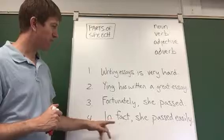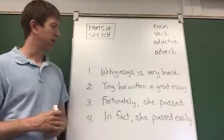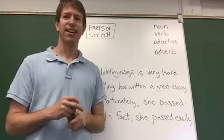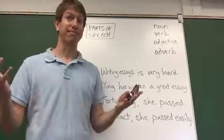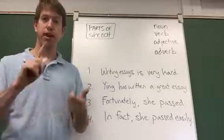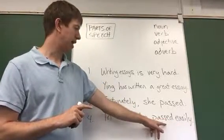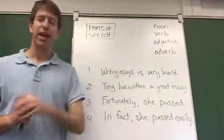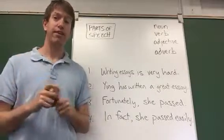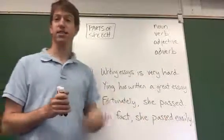And then in number four, we've got another kind of adverb — one that modifies a verb. So how did she pass? She passed easily. She passed happily. So an adverb could be in any of those three positions: modifying an adjective, modifying a whole sentence, or modifying a verb. One way you can sometimes identify adverbs is by the '-ly' ending. A lot of English adverbs have '-ly' in them — you can see 'fortunately' and 'easily' do, but 'very' doesn't, so you just have to be a little careful there.